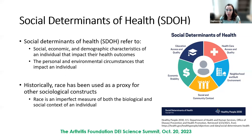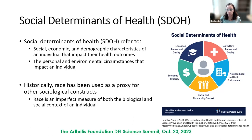I want to start with a brief overview of social determinants of health and why they're important. Social determinants of health refer to social, economic, and sociodemographic characteristics that influence the life of an individual and ultimately have the potential to impact their health outcomes — basically any personal and environmental circumstances that could impact the individual and their future health.